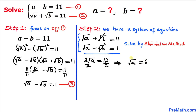Now let's undo this square root by squaring both sides. The square and the square root undo each other, so our value of a turns out to be 36.